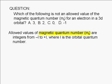Allowed values for the magnetic quantum number, m sub l, are restricted to integers starting from negative l up to positive l, where l is the orbital quantum number.